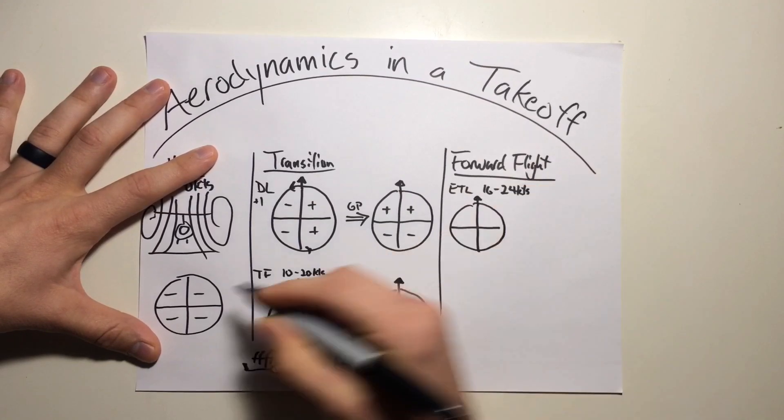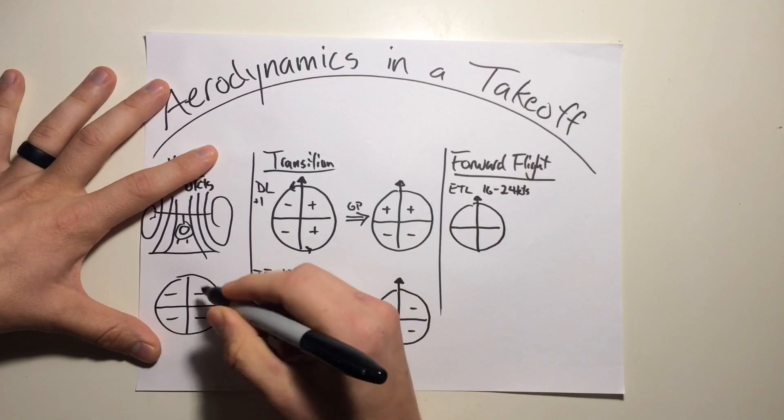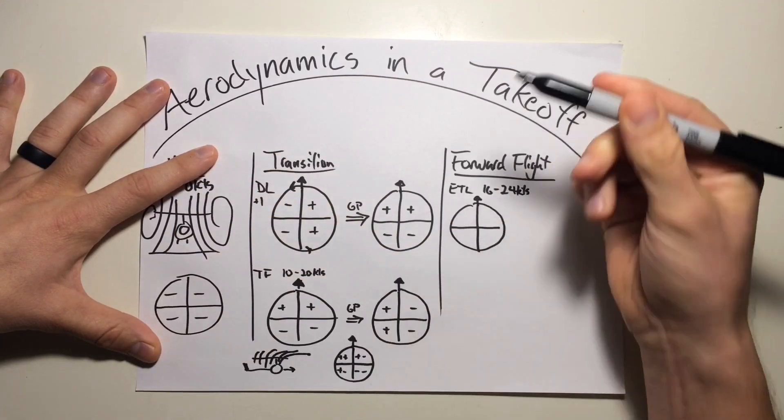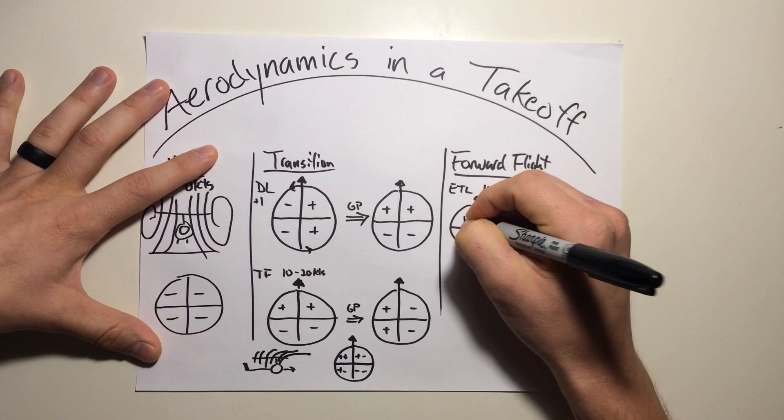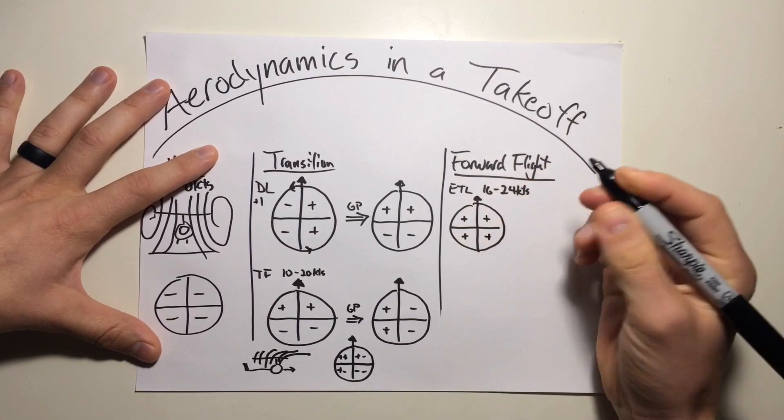So what we had earlier, less lift, less efficiency during airflow at a hover. Now we've gotten past the vortices and it's an increased lift equally on all parts of the rotor system.